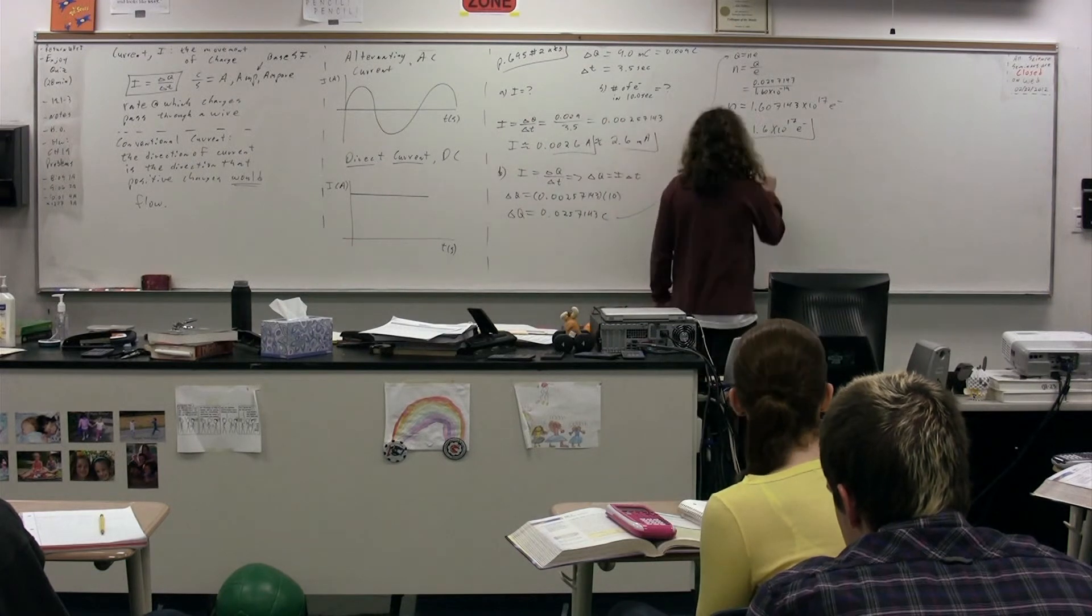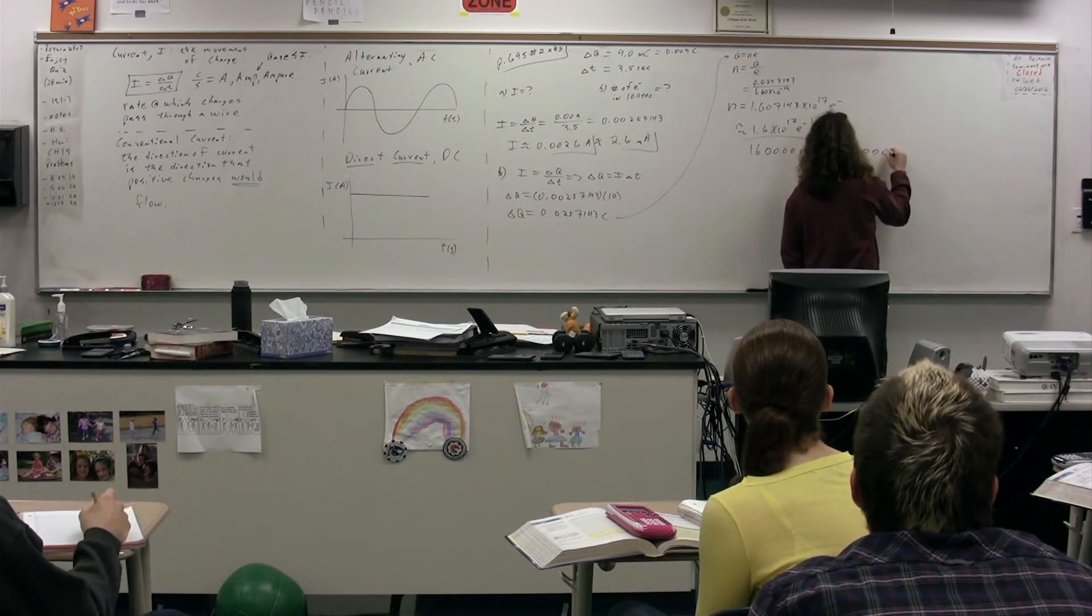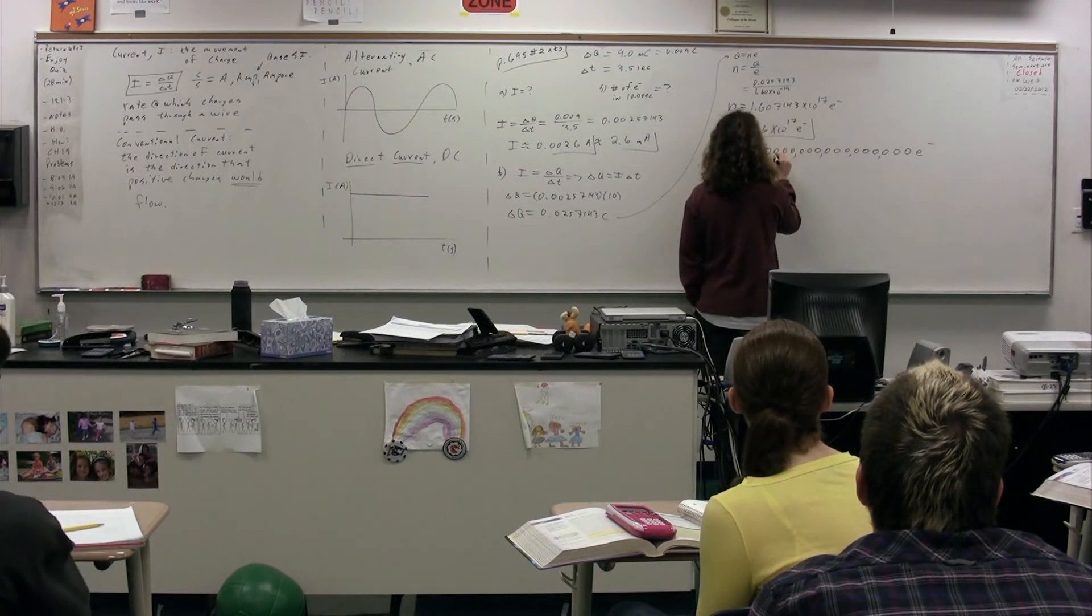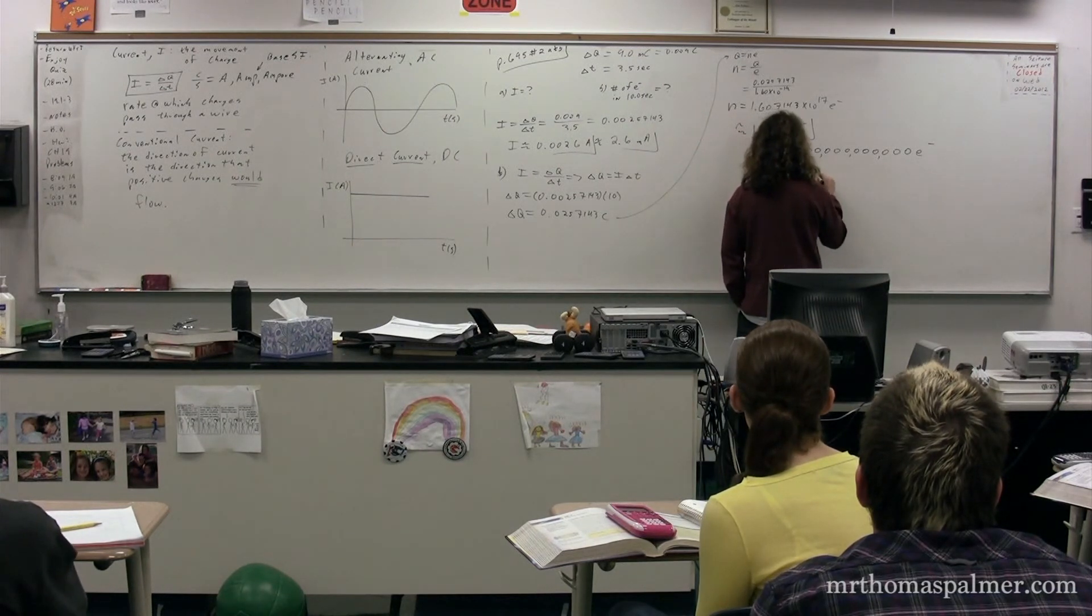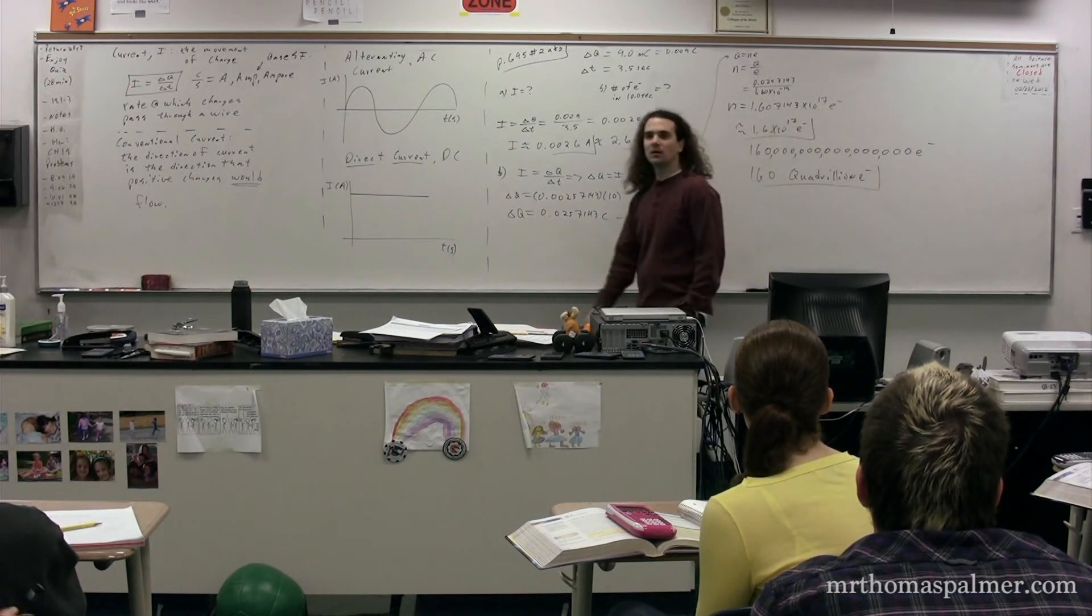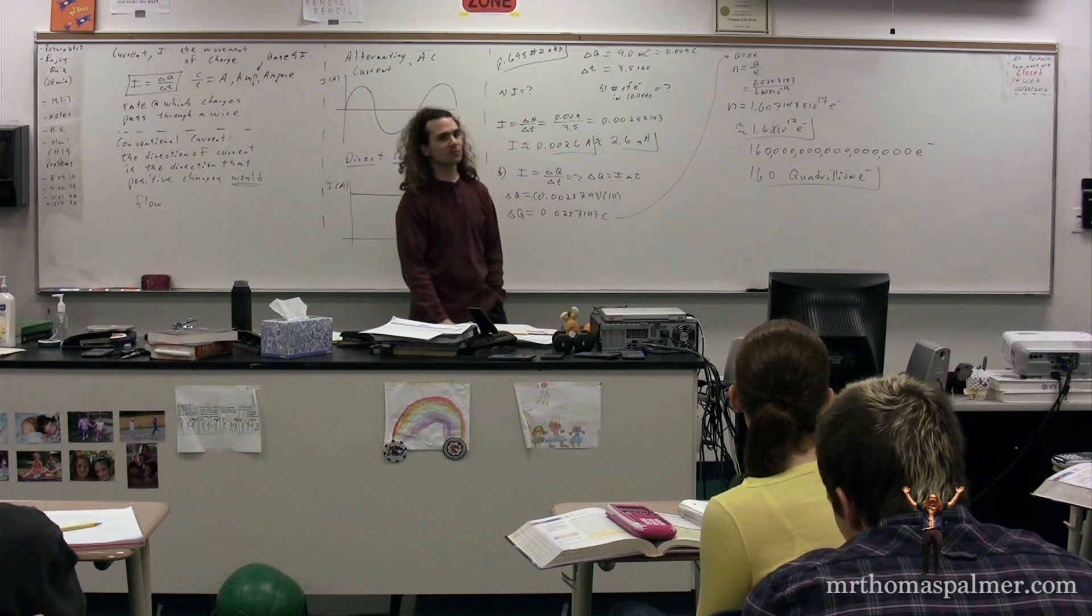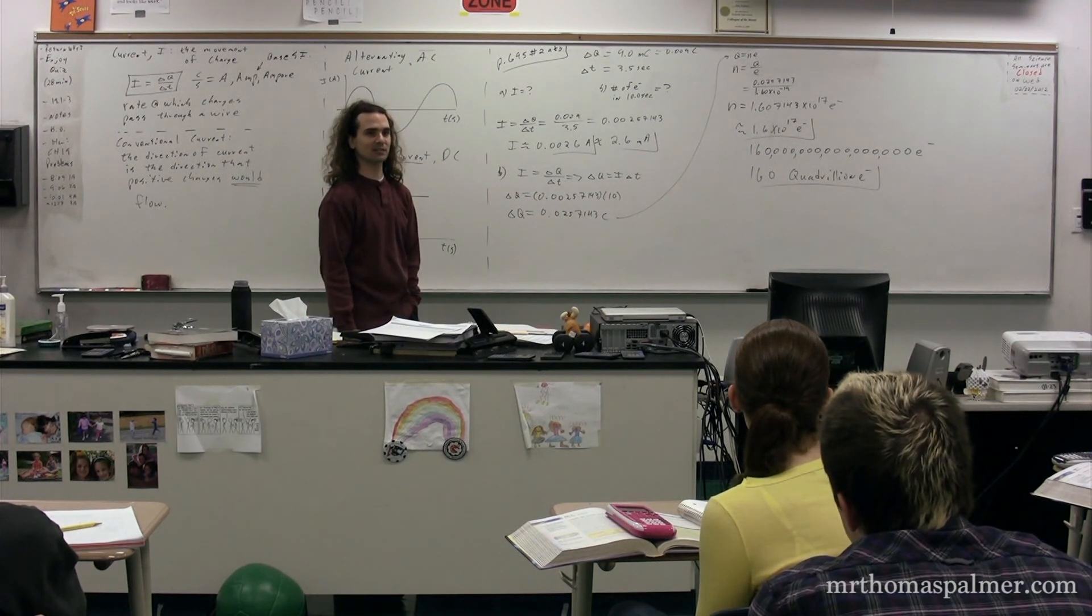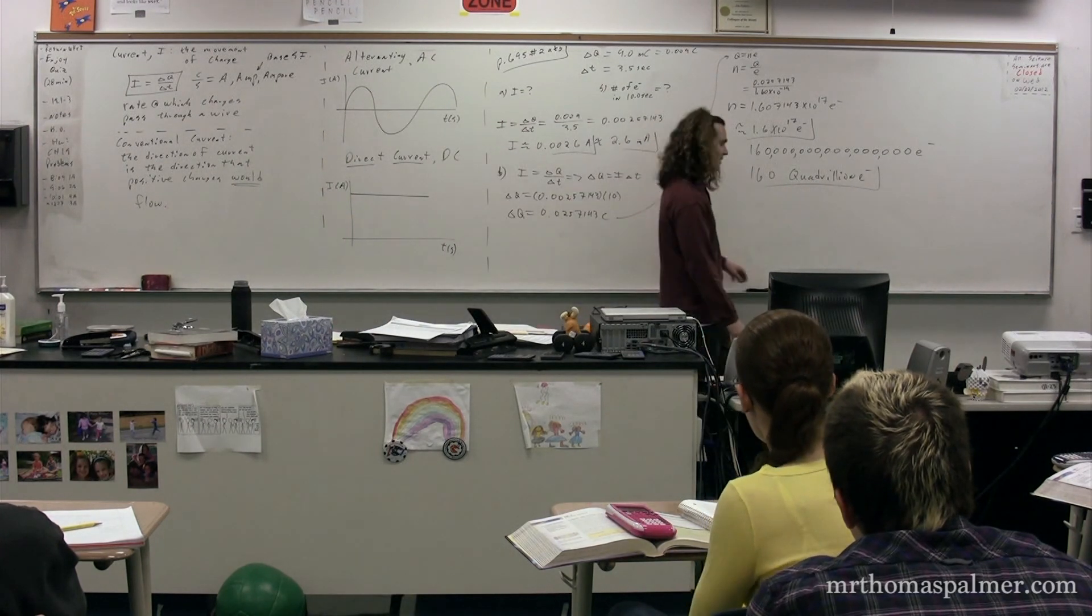Let's talk about this number. That's 160 quadrillion electrons in 10 seconds, which is not very long, with a current of 2.6 milliamps, which is not very much. 160 quadrillion electrons. Just to put it in perspective as to how many electrons we're talking about moving in these wires.